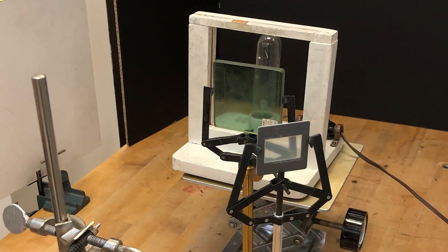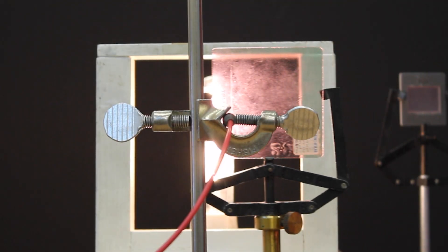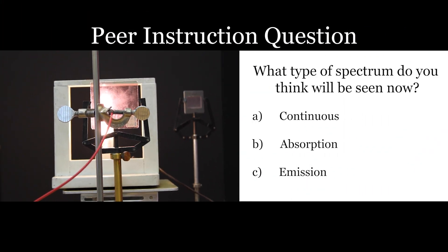We now add our didymium slide to the apparatus, sliding it in between the diffraction grating and the source. Think about the effect that the didymium will have and make a prediction. What type of spectrum do you think will be seen now?